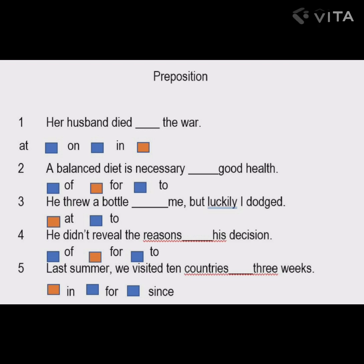Let us move to the third sentence: 'He threw a bottle ___ me, but luckily I dodged it.' We have options — at and to. Using 'to': he threw a bottle to me — but the word that makes sense is 'at': he threw a bottle at me, but luckily I dodged it. So 'at' is the correct preposition.